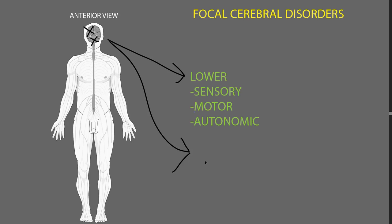There may be abnormalities of the lower neural functions, including sensory, motor, or autonomic functions. Or, depending on where the lesion is, there may be abnormalities of the higher neural functions, including cognition, emotions, or consciousness. Most of the motor abnormalities that may occur with focal lesions of the brain stem or the cerebrum are upper motor neuron abnormalities.